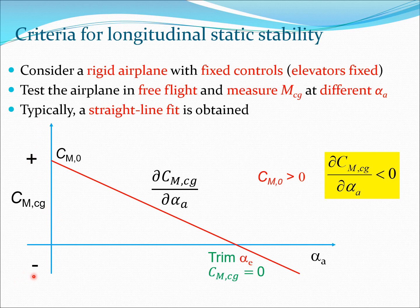On the CMCG versus alpha_A graph, you start with a positive CM0 value and the line goes downward, hitting zero at the trim condition where alpha_A equals alpha_E (the equilibrium angle). Beyond that point, CMCG becomes negative. The slope of this line, given by ∂CMCG/∂alpha_A, is negative. These characteristics are present in a typical stable aircraft, and we are going to discuss why this is necessary.